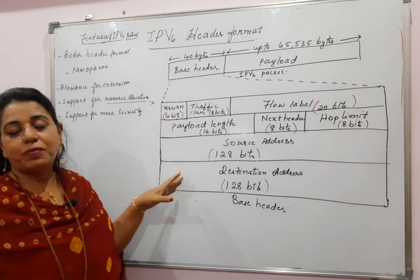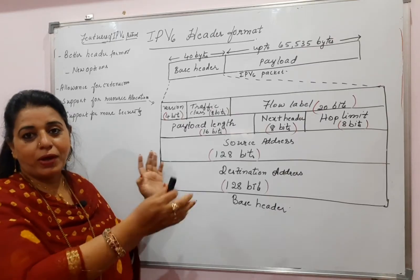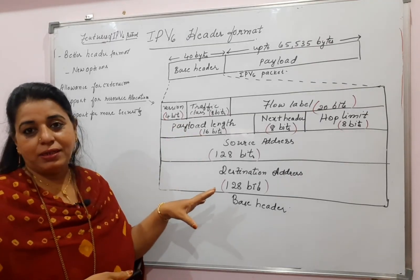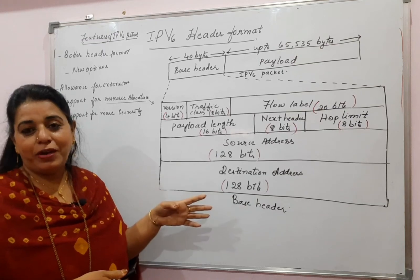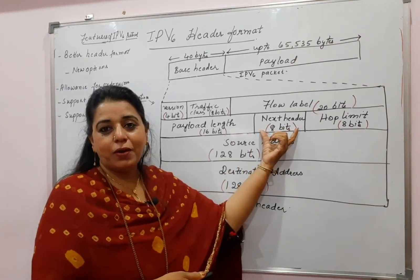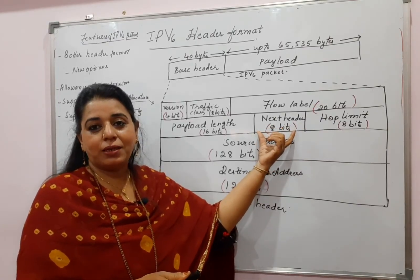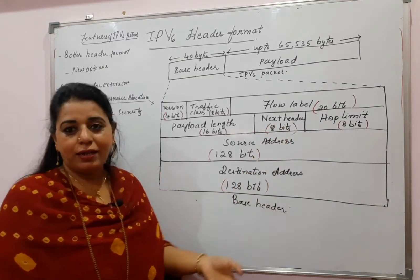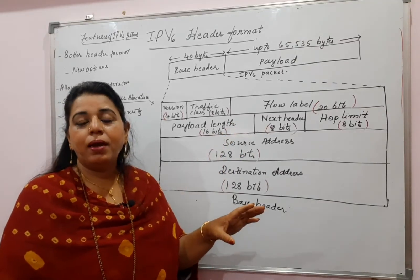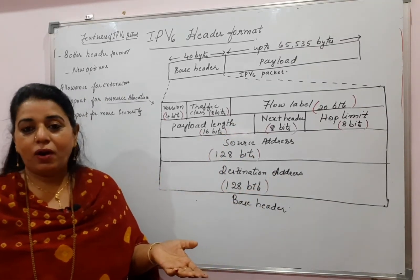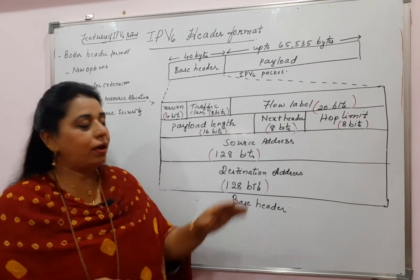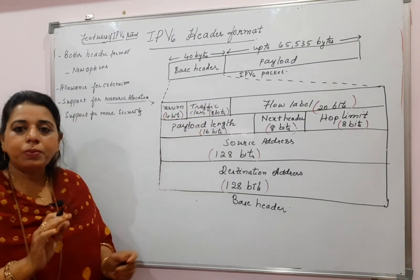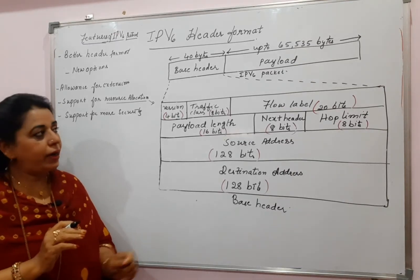The header looks very simple compared to IPv4, where you would have seen so many fields. In IPv6, you see fewer fields. More features, fewer fields — how is this possible? This is possible because of the field called the next header. All the extra features are hidden in this next header. In simpler words, the next header is like the options of IPv4.